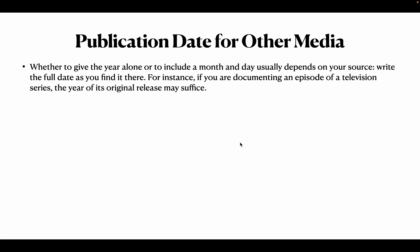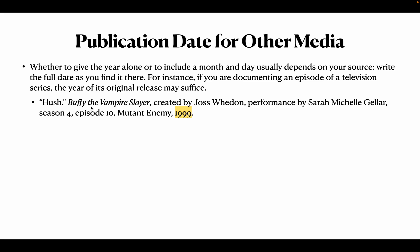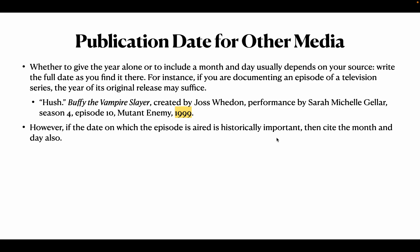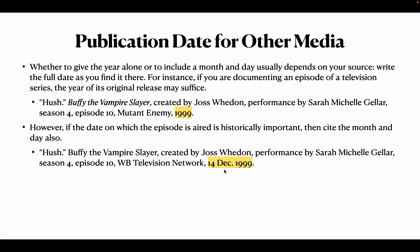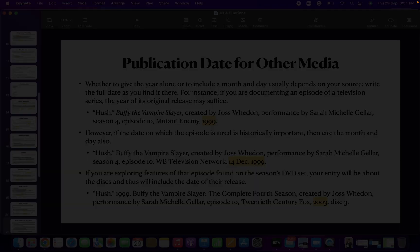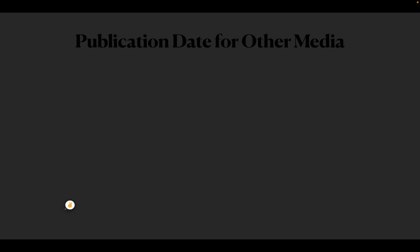Page number means location. For publication date for other media, check whether to give the year alone or include month and day. That depends on your source. If documenting an episode of a television series, the year might be enough — for example, 'Hush' is cited as 1999, year only. However, if the date the episode aired is historically important, then cite the full date: 'Hush,' 'Buffy the Vampire Slayer,' created by Joss Whedon, performance by Sarah Michelle Gellar, then season number, episode number, production company, then date. 'Buffy the Vampire Slayer' should always be italicized.